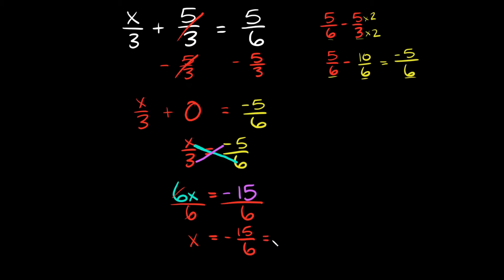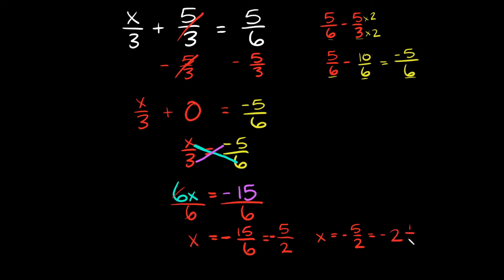On this side I'm just left with x, and that's equal to negative 15 over 6, which we can still reduce because the top and the bottom are both divisible by 3. So 15 divided by 3 is 5, and 6 divided by 3 is 2 — and don't forget your answer is negative. So your final answer is x equals negative 5 over 2. Or if you want to write this as a mixed fraction, you could write it as negative 2 and a half.